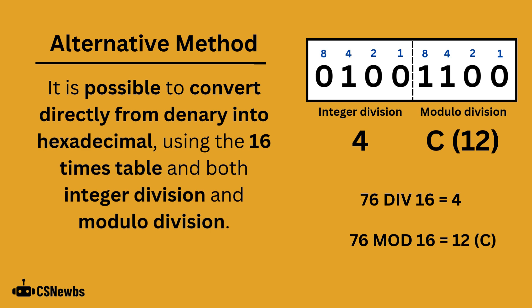To work out the left nibble, you would need to use integer division. For example, 76 integer division 16 gives you 4, as that is a whole number when 76 is divided by 16.